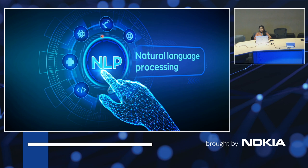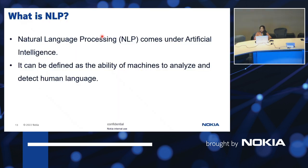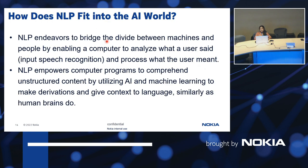To solve our purpose, we are choosing a natural language processing algorithm. NLP processes whatever human language we speak. It bridges machines and people by enabling a computer to analyze what we have said, recognizing speech and processing what the user meant. To converse with humans, a program must understand syntax like grammar, semantics, phrases, conversation, and context — all of which can be achieved with NLP.